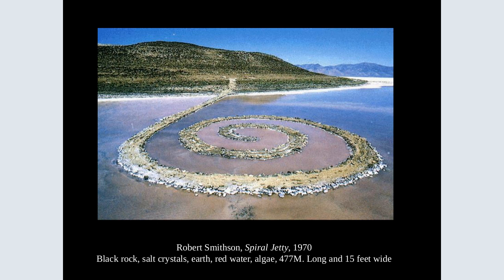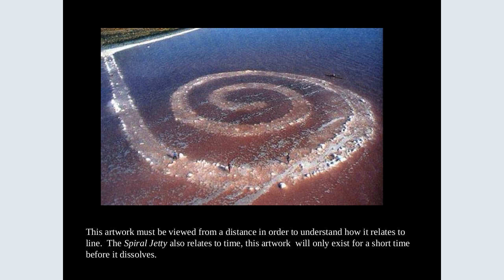Robert Smithson's Spiral Jetty is a pretty famous piece — we just see that continual line. This is kind of an earthwork piece that is time-based. It's made out of black rock, salt, and earth, and the natural erosion of the water is going to make it disappear over time. This artwork must be viewed from a distance to understand how it relates to line. The Spiral Jetty also relates to time — it will only exist for a short time before it dissolves.